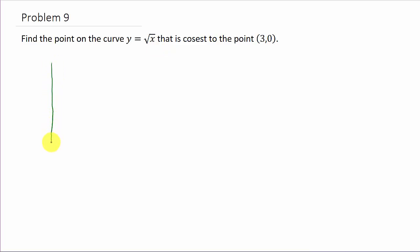Alright, so if we draw a picture here, if we graph the square root of x, the point (0,0) is on there, and then (1,1), and then (4,2). The graph of the square root function is going to look something like this. And then we've got the point (3,0) out here somewhere.